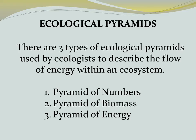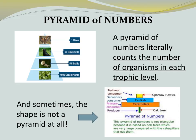Now consider how ecologists might analyze energy. There are three types of ecological pyramids used by ecologists to describe the flow of energy within an ecosystem: pyramid of numbers, pyramid of biomass, and a pyramid of energy. A pyramid of numbers literally counts the number of organisms in each trophic level. Pause the video and analyze the numbers in this pyramid. Sometimes the shape of the pyramid is not a pyramid at all.